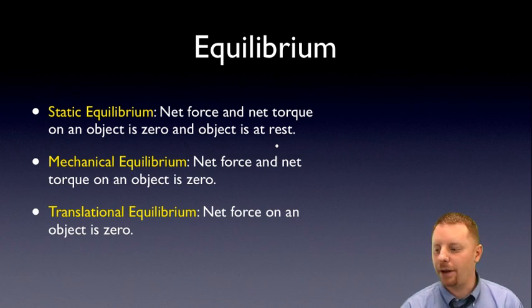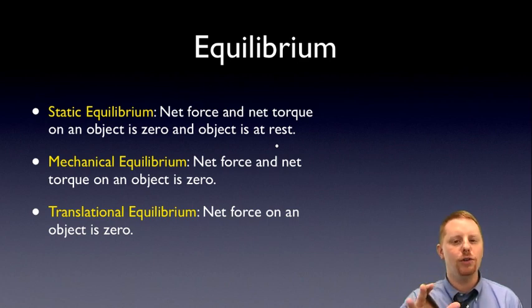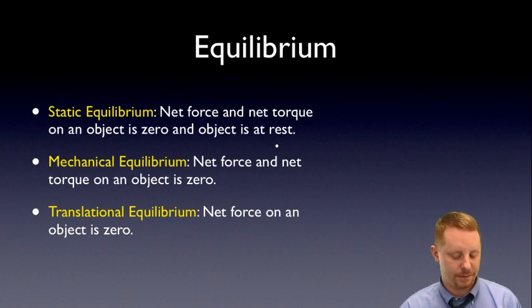Mechanical equilibrium, on the other hand, the net force and net torque on an object is zero, but the object doesn't have to remain at rest. So if you have net force of zero and net torque on an object, it could be in motion, but it's going to remain in that exact same state of motion, a constant velocity, no acceleration. And finally, translational equilibrium occurs when the net force on an object is zero. No net force, therefore the object can be at rest or moving at a constant velocity. It will not accelerate.